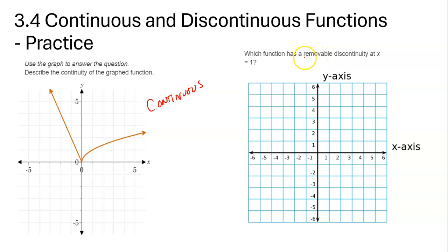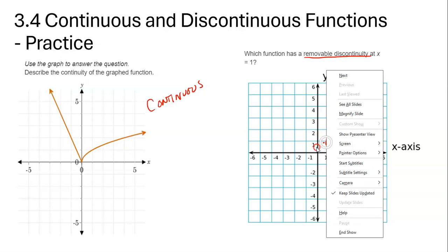Which function has a removable discontinuity at x equals 1? And it's the one that looks like this, so it has a circle here, but it is a parabola. Okay, why does it do that?